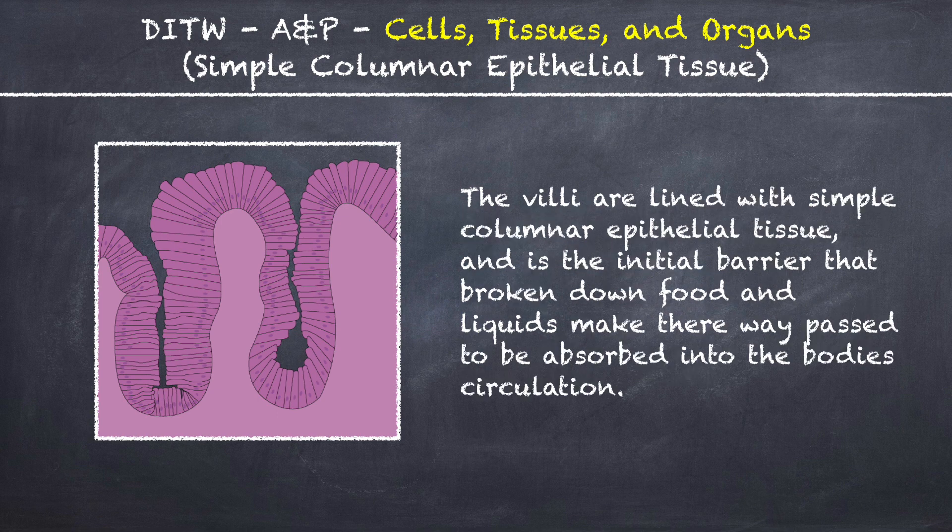The villi are lined with simple columnar epithelial tissue and is the initial barrier that broken down food and liquids make their way past to be absorbed into the body's circulation.